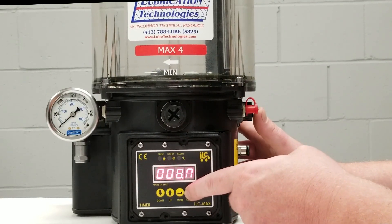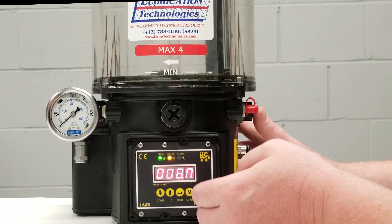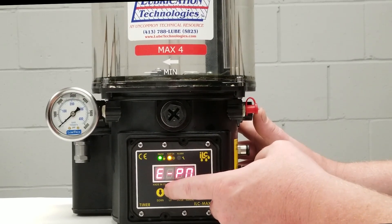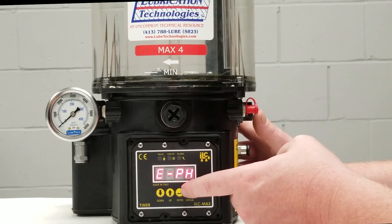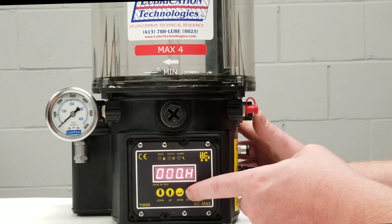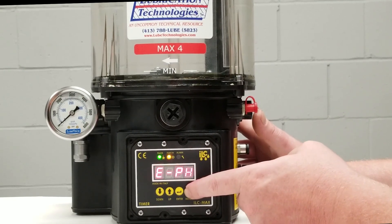E-PN would be my pause time in minutes which is 8 minutes. E-PH would be my pause time in hours which we have no hours programmed into this pump. And go back out to the programming mode.